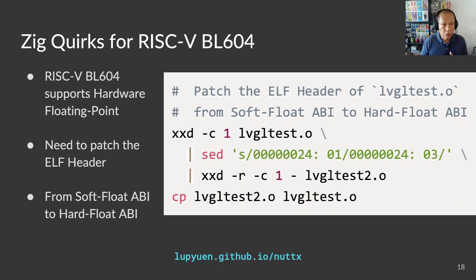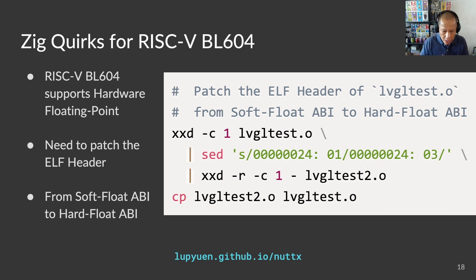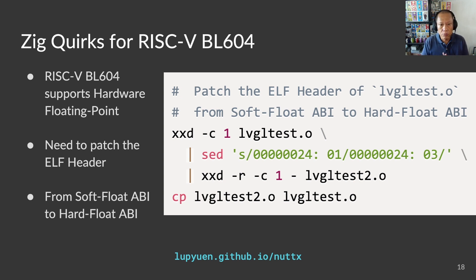Things get a little quirky for Zig on RISC-V BL602, since Zig hasn't officially reached version 1.0 yet. The binary produced by the Zig compiler says that it's using software floating point ABI — ABI for application binary interface — but we told the Zig compiler to use hardware floating point. The binary produced by Zig won't link with NuttX because the rest of the binaries are hardware floating point. This is a terrible hack that modifies the ELF header from soft float to hard float. Our Zig binary will link successfully with NuttX after this hack.